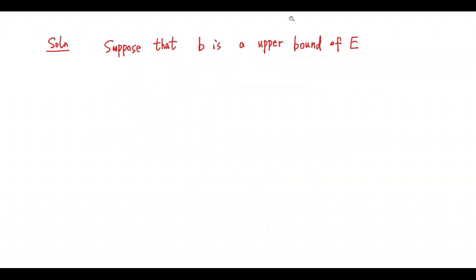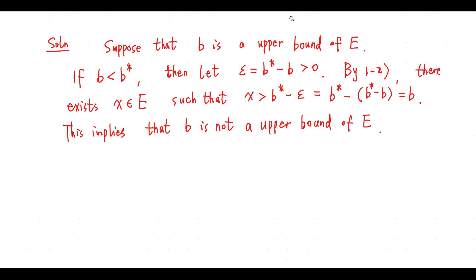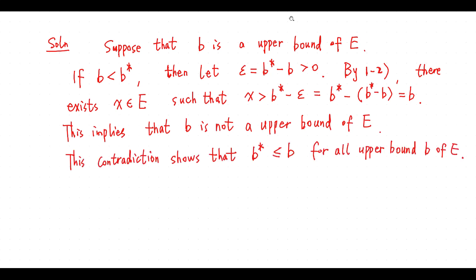Solution. Suppose that B is an upper bound of E. If B is less than B*, then B* minus B is greater than 0. Let epsilon equal B* minus B. By condition 2, there exists x in E such that x is greater than B. This implies B is not an upper bound of E. This contradiction shows B* is less than or equal to B for all upper bounds B of E.